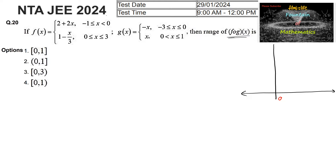We can see that from minus 1 to 0, and again from 0 to 3. From minus 1 to 0 the graph is 2 plus 2x — at x equal to minus 1 we get 0, and at x equal to 0 we get 2. And from 0 to 3: at x equal to 0 it is 1, at x equal to 1 it is 1 minus 1 upon 3 which is 2 by 3, at x equal to 2 it is 1 by 3, and at x equal to 3 it is 0.